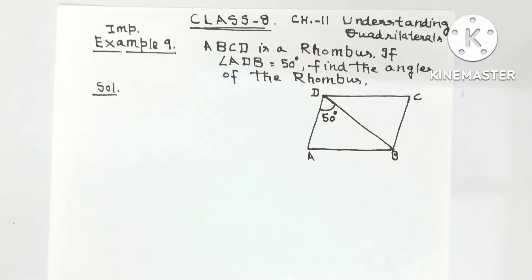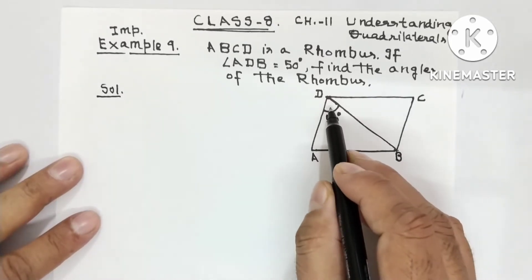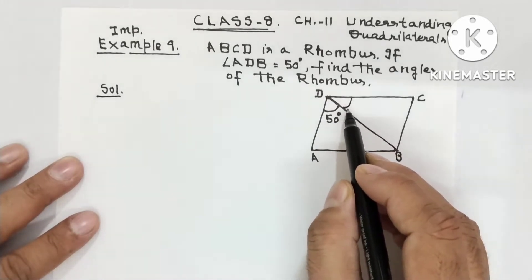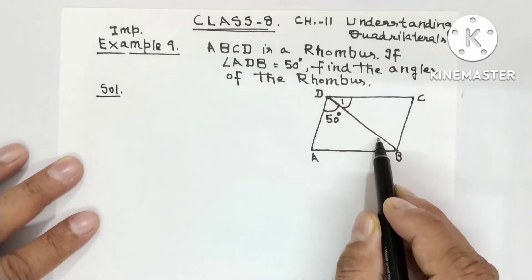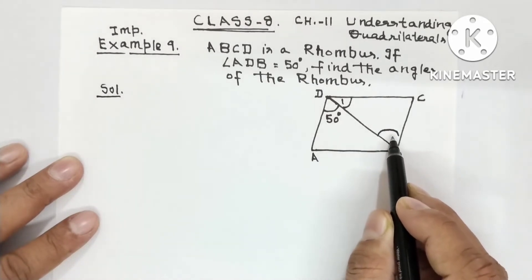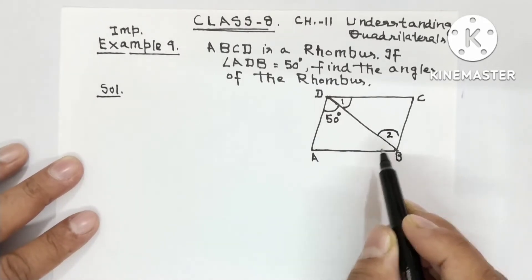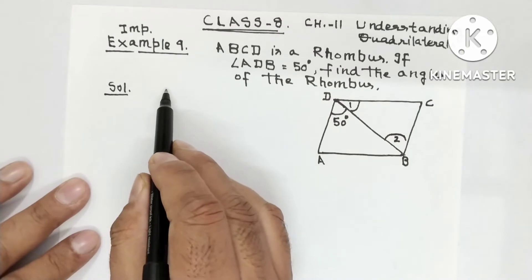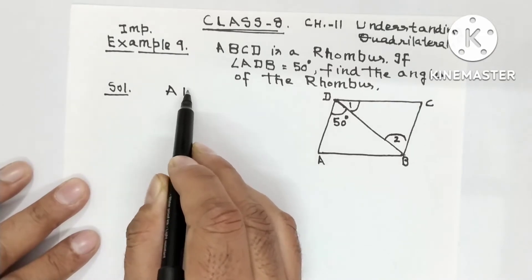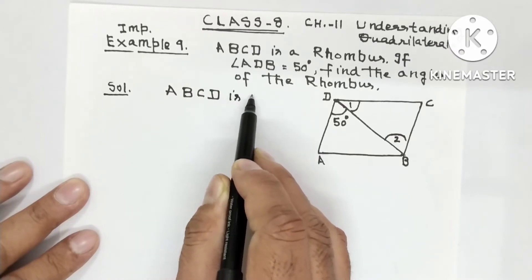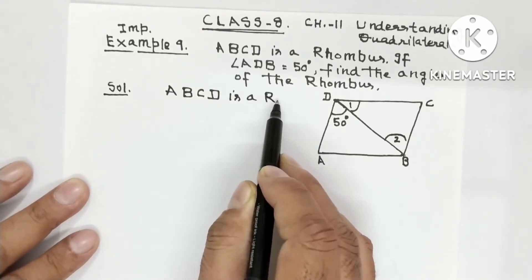Here you can assume and give names to the angles. You can give this adjacent angle the number 1 and this other angle the number 2. Numbering the angles makes writing them a bit easier. So you can give numbering. Now look — ABCD is a rhombus. This is given in the question.